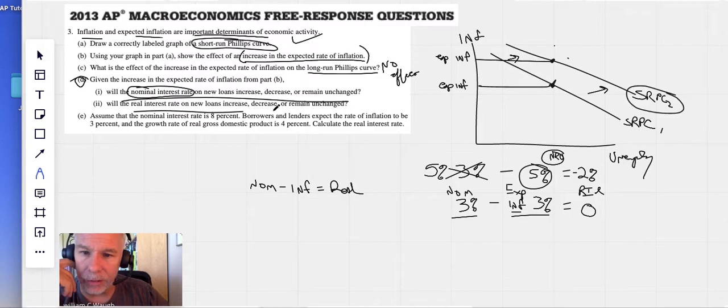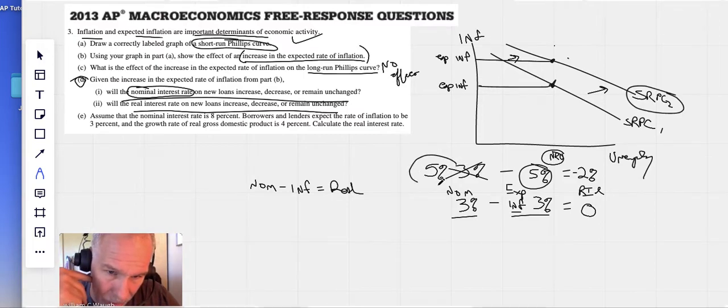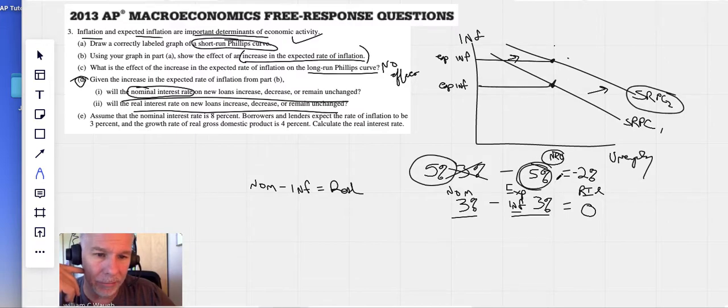Will the real interest rate on new loans increase, decrease, or remain the same? And this is helpful in that if you understand that bankers will raise their rate of interest as expected inflation increases. If they charge 5% and the new expected inflation rate is 5%, then they are going to make 0% on their real interest rate. So, the real interest rate would not change. There would be no change here because bankers are just going to keep track of inflation. I hope that makes sense.